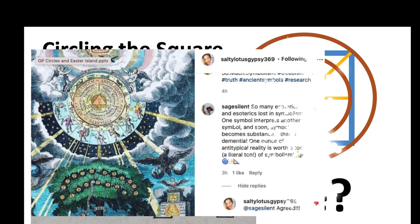But here's a caveat. Yesterday, Salty Lotus Gypsy posted this lovely picture and talked about symbolism. I said, so many esoterics get lost in symbolism. One symbol interprets another symbol and soon symbol becomes substance. That's dementia.